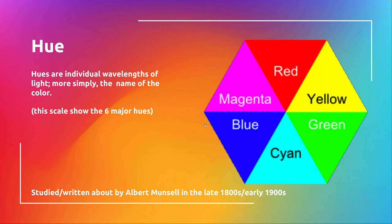They're very similar to printing colors — screen and print. So you have CMYK and RGB, similar kind of thoughts. Hue is what we talk about when we mention the actual color. So if you're talking about something that's blue, you're talking about the hue of blue.